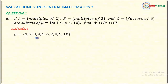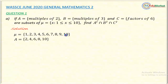Moving to set A — the question says multiples of 2. So the multiples of 2 from the universal set are the elements in set A: {2, 4, 6, 8, 10}.